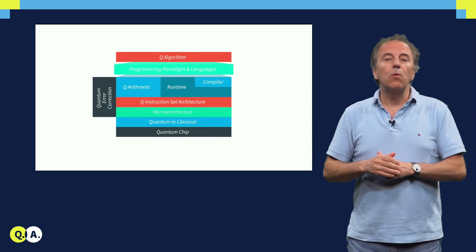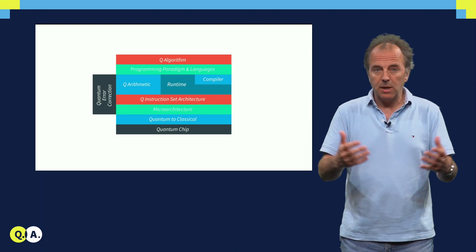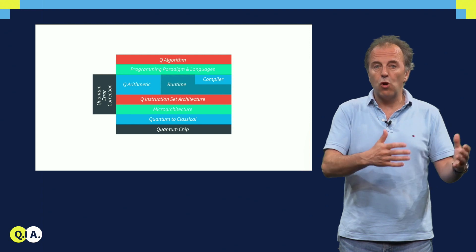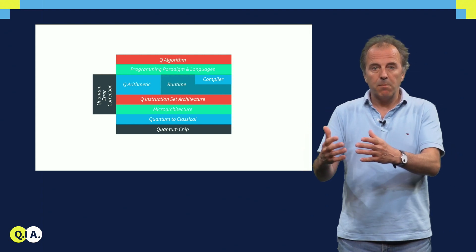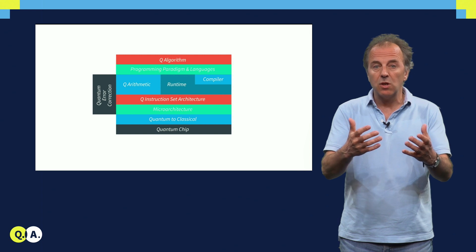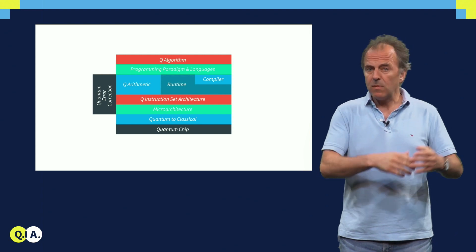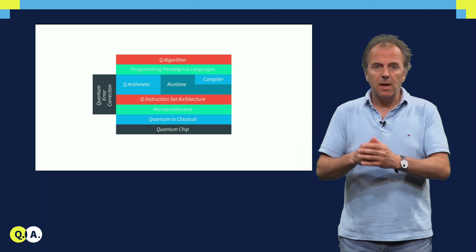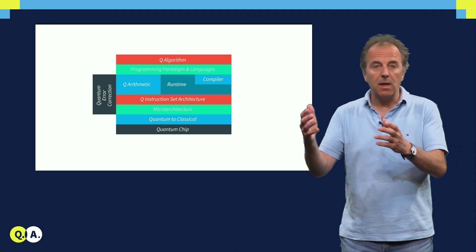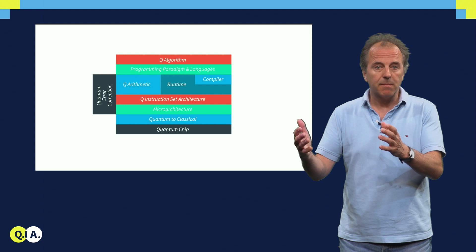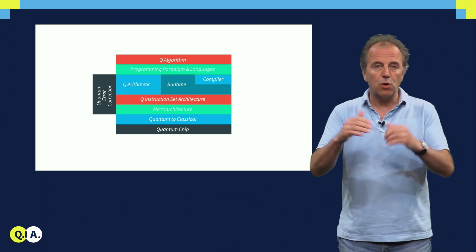One layer lower is the programming layer. When you have an application to program, you do that classically using a programming language such as C++, Fortran, COBOL, or any other language. Those languages produce code for a classical processor. But we also have to develop our own quantum language for the quantum accelerator. There are a couple of languages developed so far: there is CAFCC, there is Project Q, and here at QuTech we are developing our own programming language called OpenQL, which is inspired by OpenCL — a language developed for GPU programming — and we are now adapting it to the quantum infrastructure.